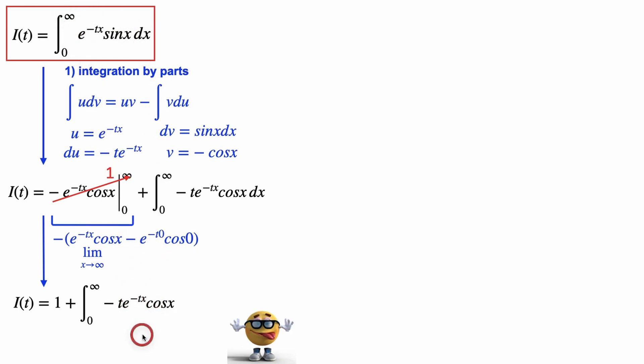We now have a t in front, although t is just like a number, like a constant. But we just changed a sine x for a cosine x. So it doesn't look like it helped us. And here's the sneaky part.